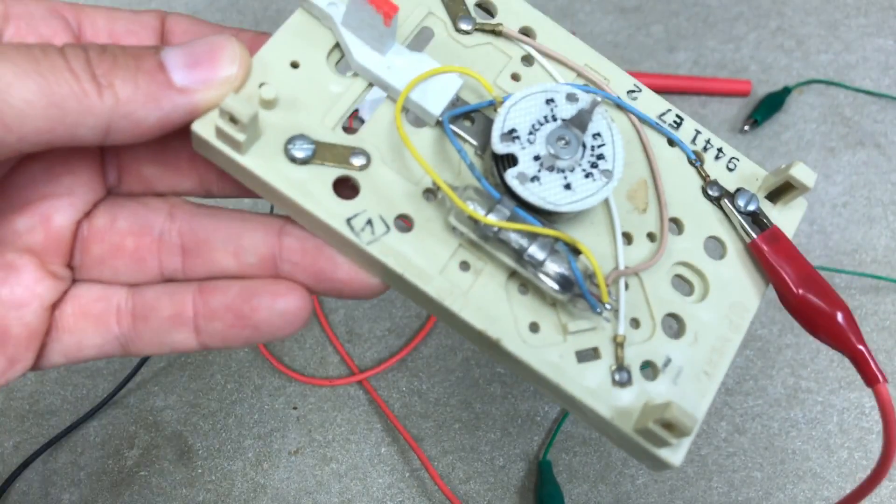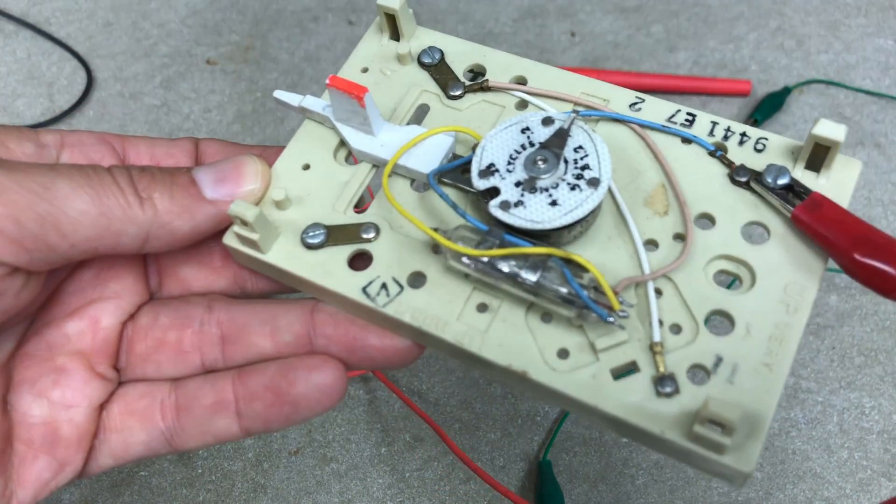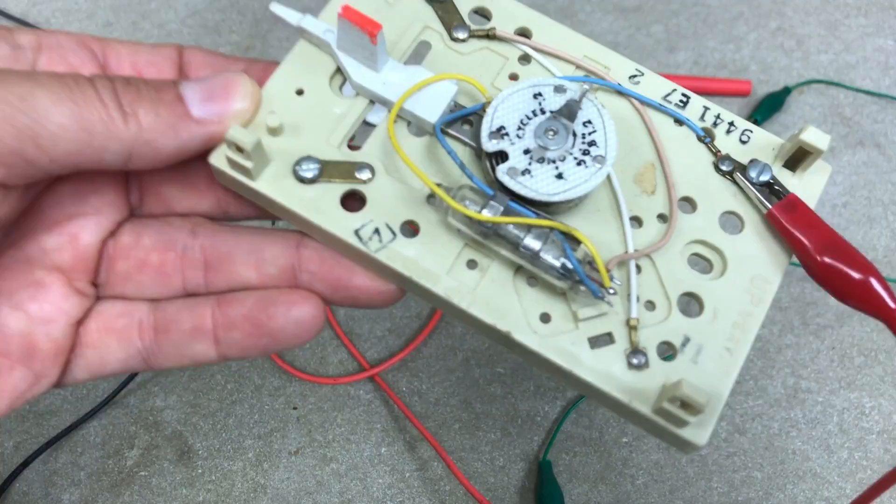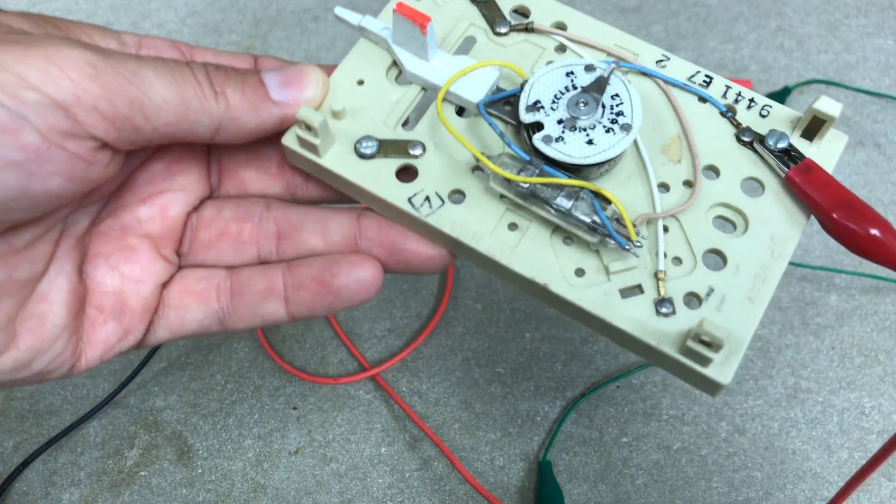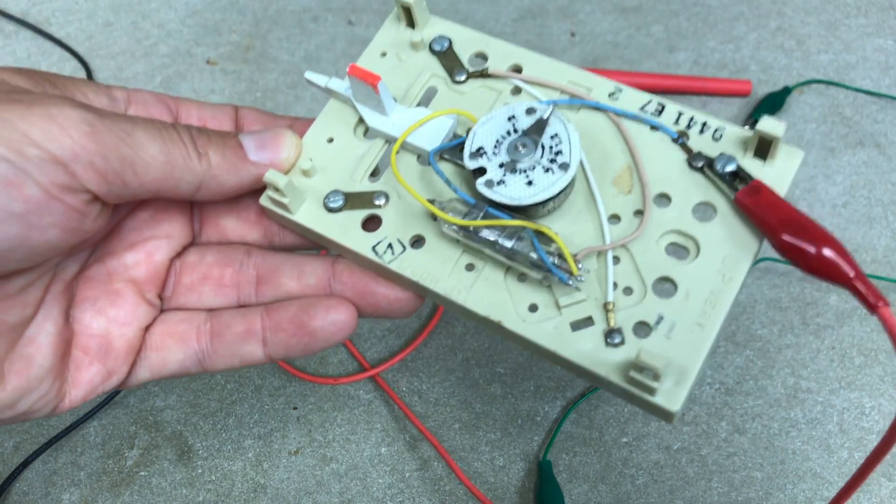But if you notice the mercury in there, let me see if I can focus on that. As I move it the mercury moves back and forth and it's a metal so it does conduct. By tilting this I can make that mercury move over contacts and turn it on or off.